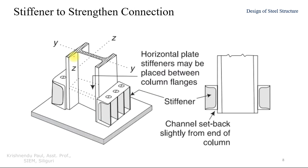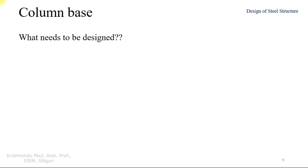In some situations, strength needs to be increased further, which can be done by providing stiffeners. Here, for example, a channel section is used on the flange, and between the channel sections there are stiffeners that increase the rotational resistivity by a higher amount. This type of stiffener is required in specific cases depending on the situation.